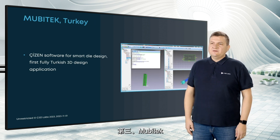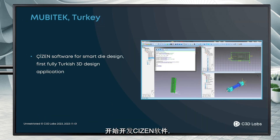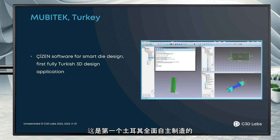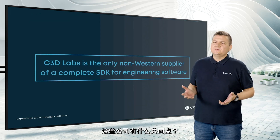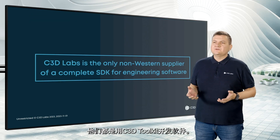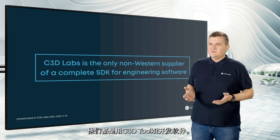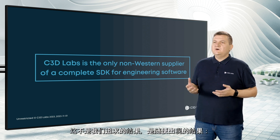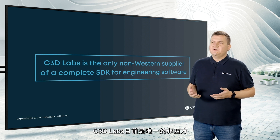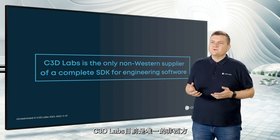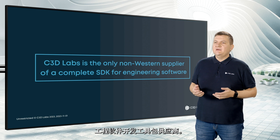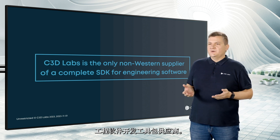Third is Mobitech, who started the development of Chisin software for smart die design — the first fully Turkish 3D design application. What unites all these companies? All of them use C3D Toolkit for software development. It wasn't our goal, but it happened. Today, C3D Labs is the only non-Western supplier of a complete SDK for engineering software.